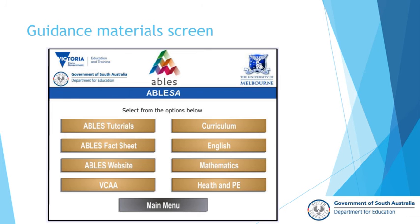This is the guidance materials screen which you can access from the main screen for ABLES. I would suggest that at the conclusion of this, or when you're about to embark on using ABLES, that you access this screen and go into the ABLES tutorials. That will open a second screen within your browser and you will then actually be able to go through every single point within the assessment and have a look at how to access all the different parts of the ABLES assessment. It's a really useful thing to do to show you how to register students, how to change their classes when you get to the end of the year and classes change, and also how to produce reports and do assessments.